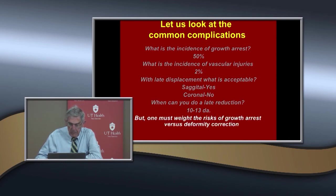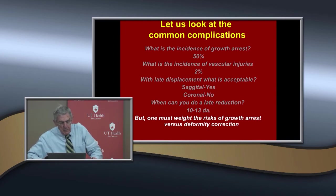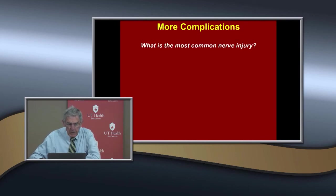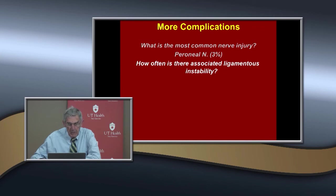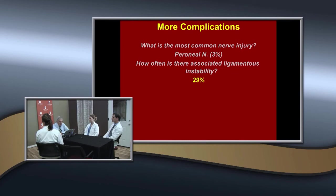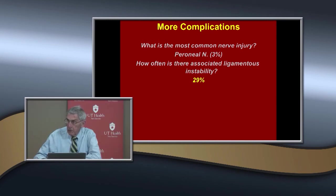You must weigh the risk of growth disturbance versus the need for deformity correction. In summary of complications: perineal nerve injury is about 3%. Associated ligamentous instability occurs in about a quarter of patients — everyone focuses on the fracture, but ligament injuries may need to be addressed. The fracture will heal, but ligament injuries must be recognized.